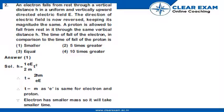A proton is allowed to fall from rest through the same vertical distance h. The time of fall of the electron in comparison to the time of fall of the proton is?